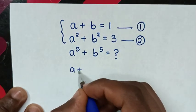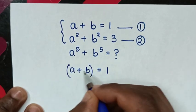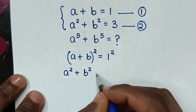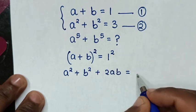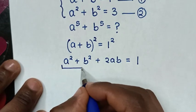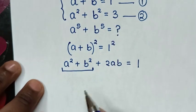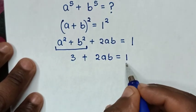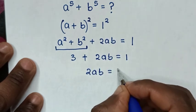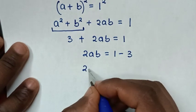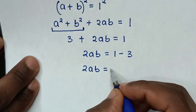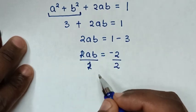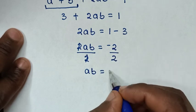From equation 1, which is a plus b equals 1, we square both sides. Expanding gives a squared plus b squared plus 2ab equals 1. From equation 2, a squared plus b squared equals 3, so substituting gives 3 plus 2ab equals 1. Taking 3 to the right side: 2ab equals negative 2, so dividing both sides by 2 gives ab equals negative 1.